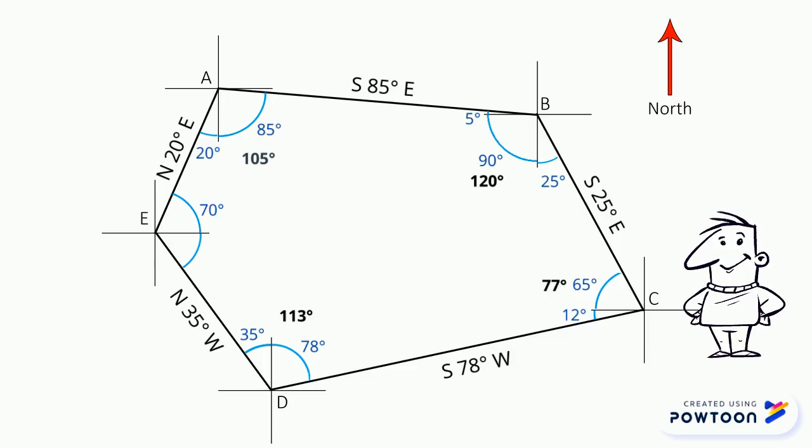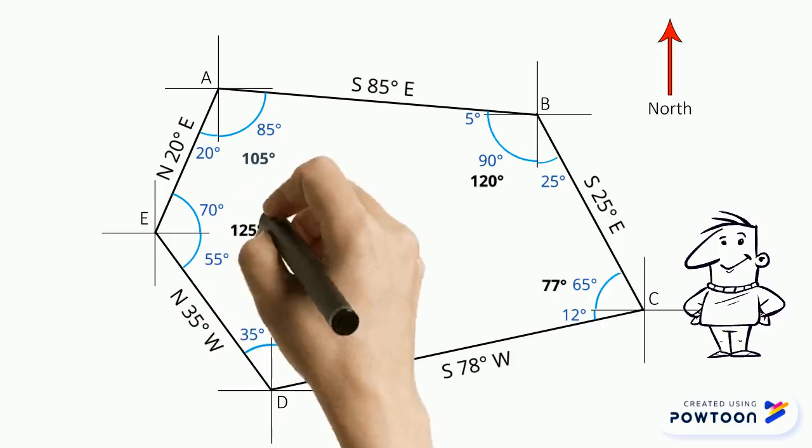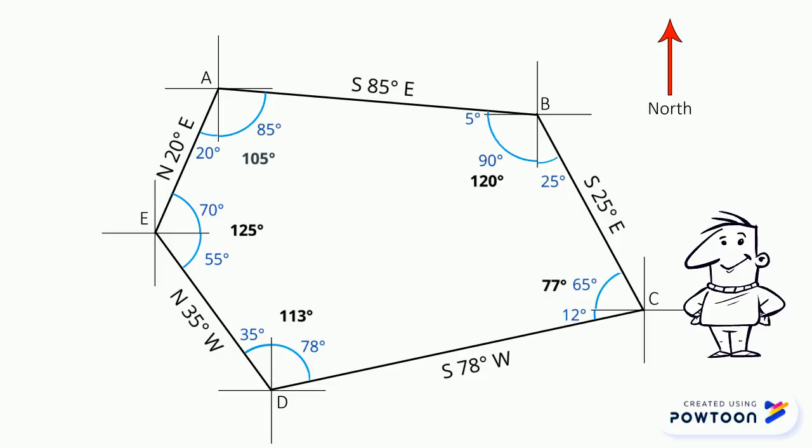And we must add that to 90 minus 35, since this angle measures 35 degrees. So we add 70 and 55, that gives us 125 degrees, the interior angle of point E.